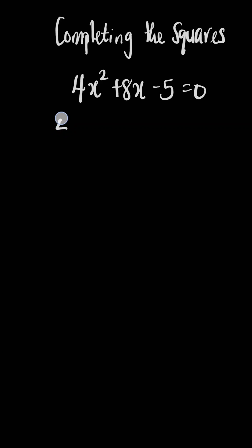The first thing to do is to rewrite this equation as 4x² + 8x = 5.